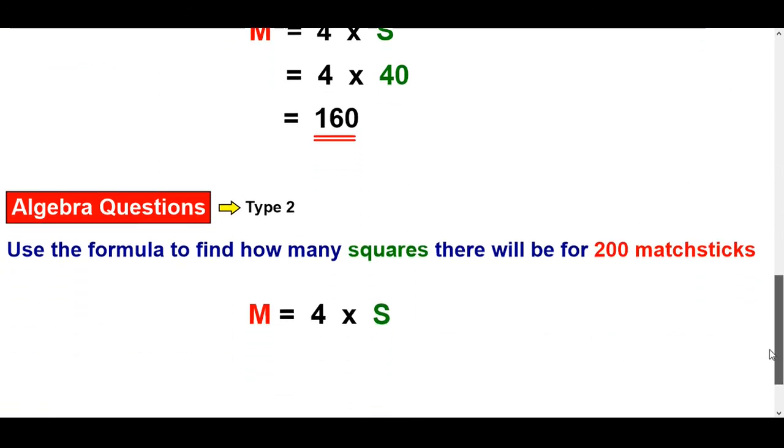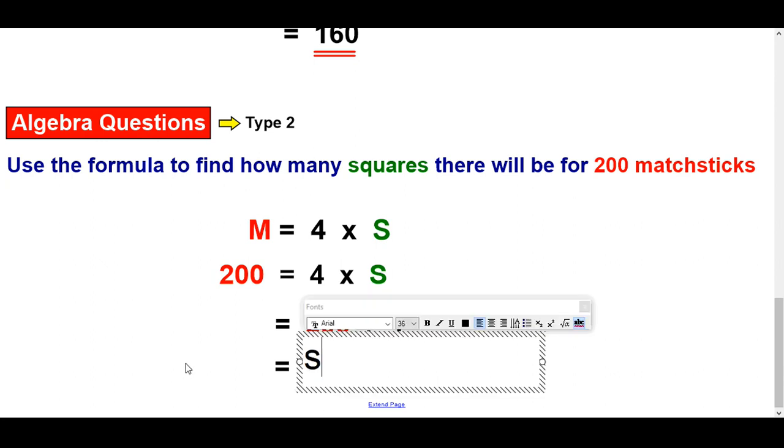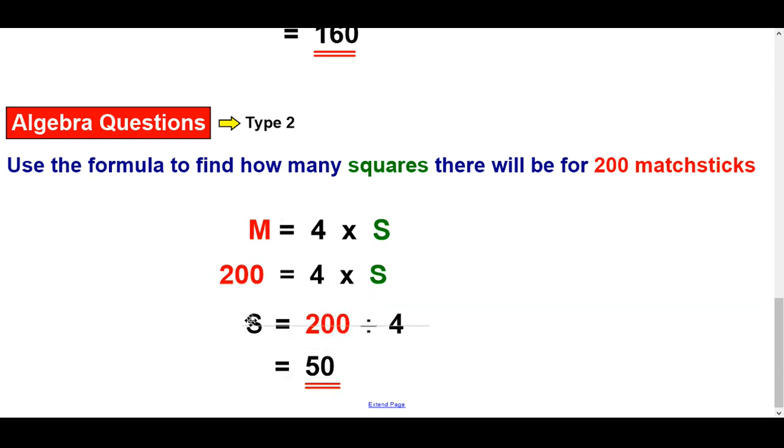Let's try that other type. So use the formula to find out how many squares there will be for 200 matches. So that's telling me this. That's 200, not this one. So it's 200 equals 4 times S. So we're saying 4 what makes 200. Think back to what we did last time. Divided, didn't we? So that should be an S. And so that's 200 divided by 4 and that gives you 50.